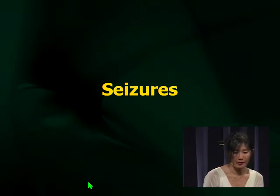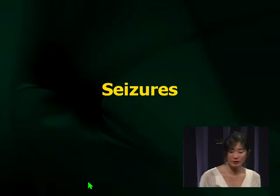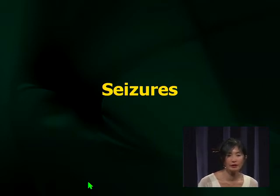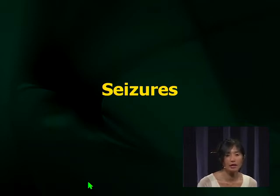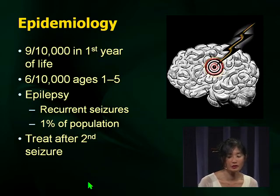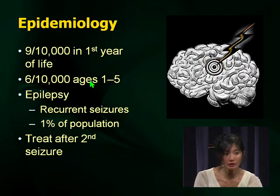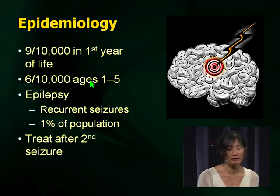That covers neurocutaneous disorders. The big three that appear over and over on examinations are tuberous sclerosis, NF1, and Sturge-Weber. Now we're moving to seizures — what we see lots of in child neurology. Topics include different medications, side effects, catastrophic side effects, and different seizure syndromes that may appear on your examination.